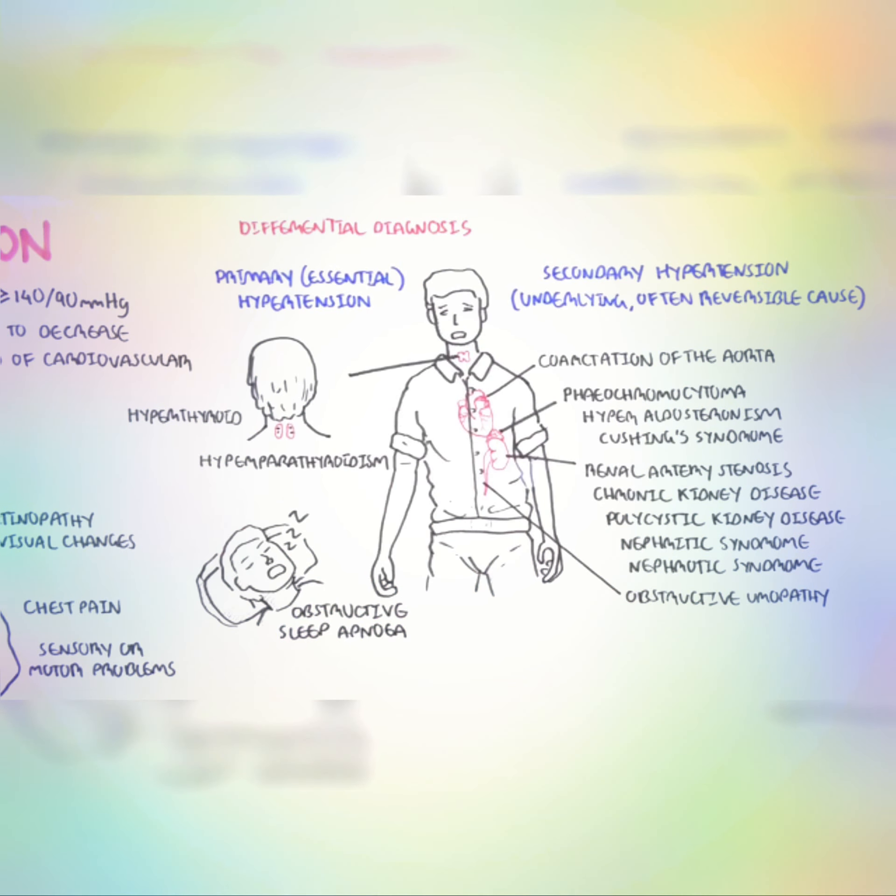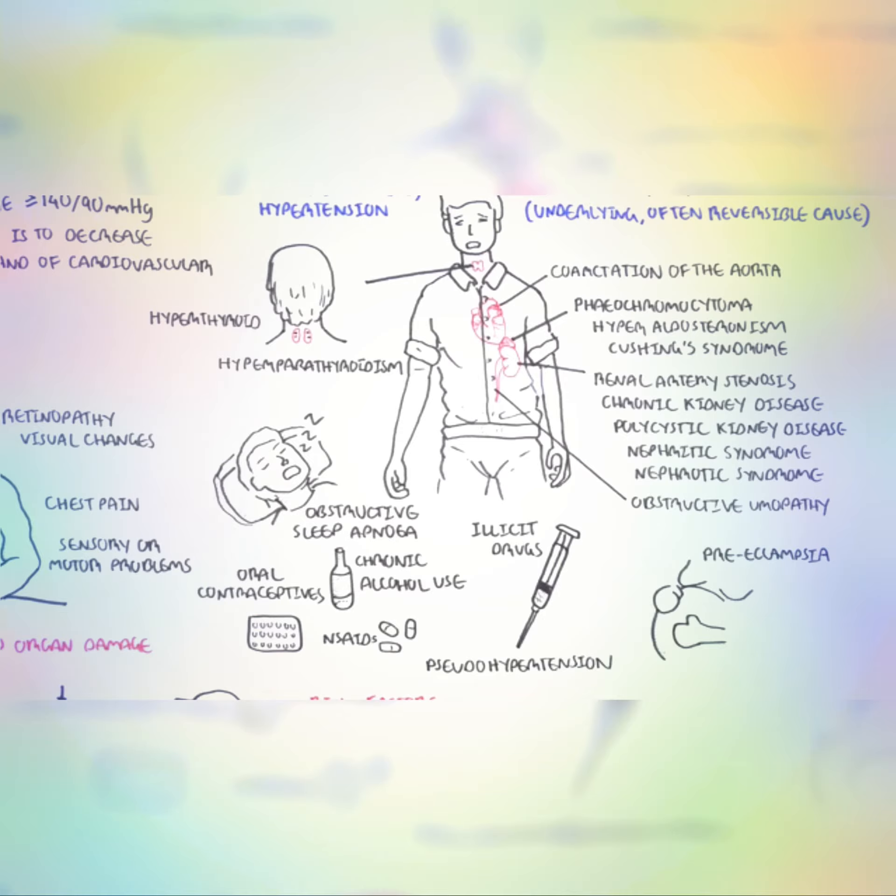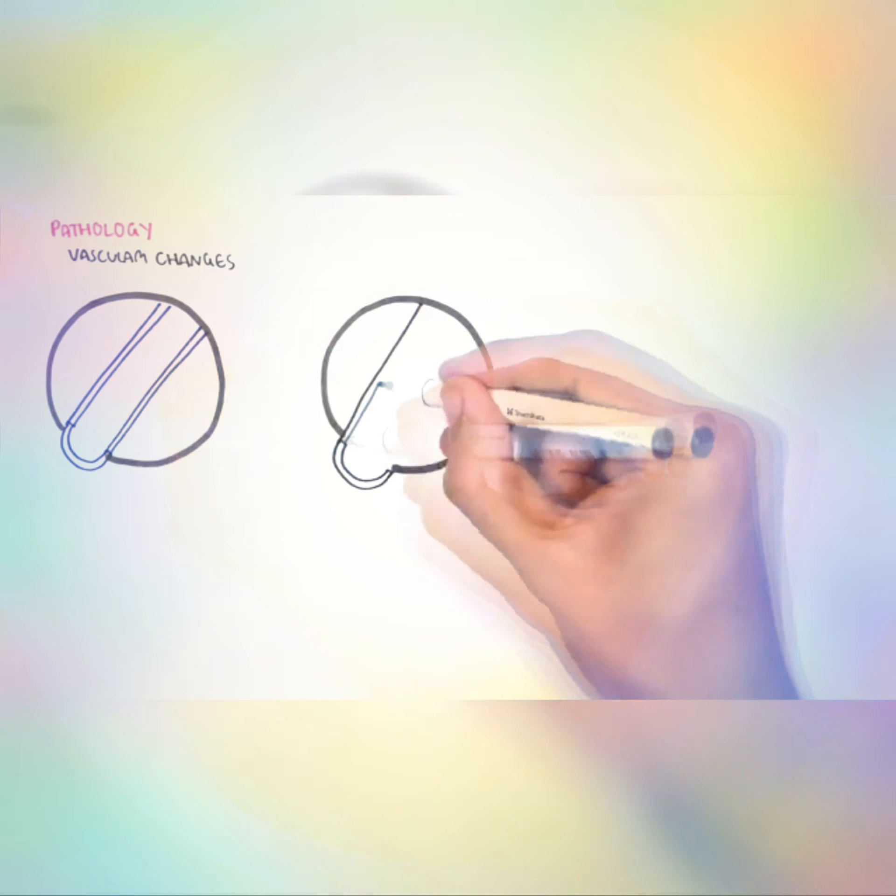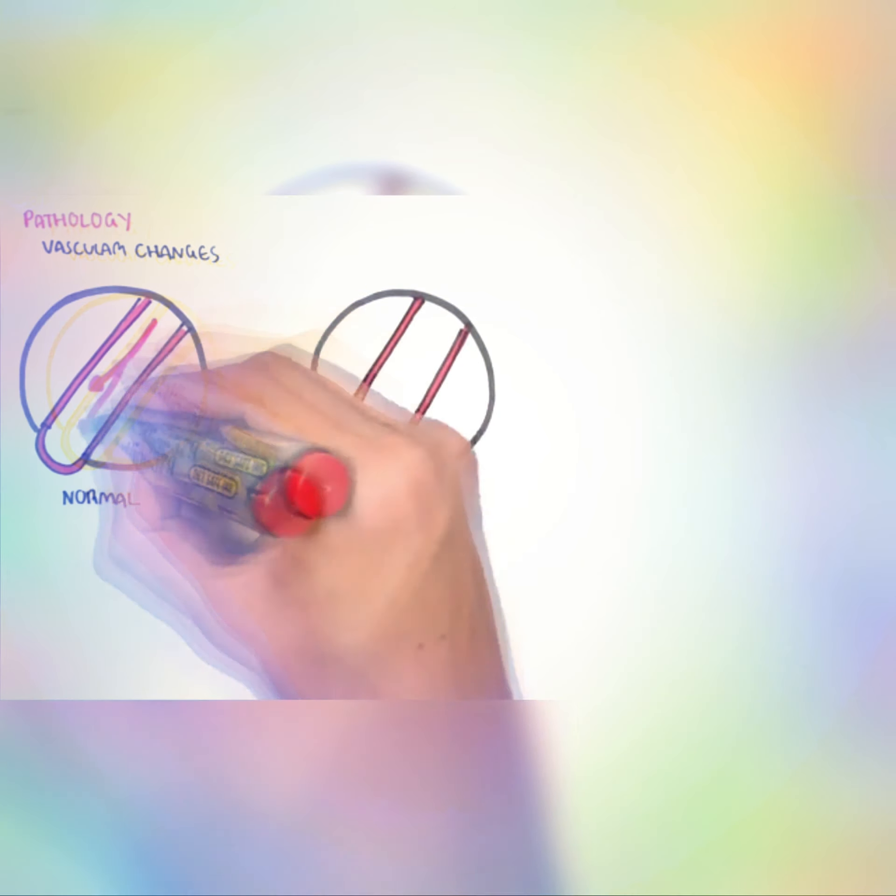Obstructive uropathy, hyperthyroidism, and hyperparathyroidism. There is also sleep apnea, chronic alcohol use, use of oral contraceptives, non-steroidal anti-inflammatory drugs, illicit drugs such as cocaine or methamphetamine, and preeclampsia in females. So those again were some causes of secondary hypertension.